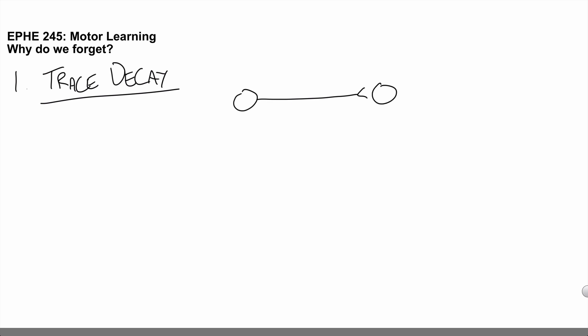At the heart of the theory, trace decay simply posits that this connection here gets weaker, and if that happens you can imagine that these neurons are no longer connected.